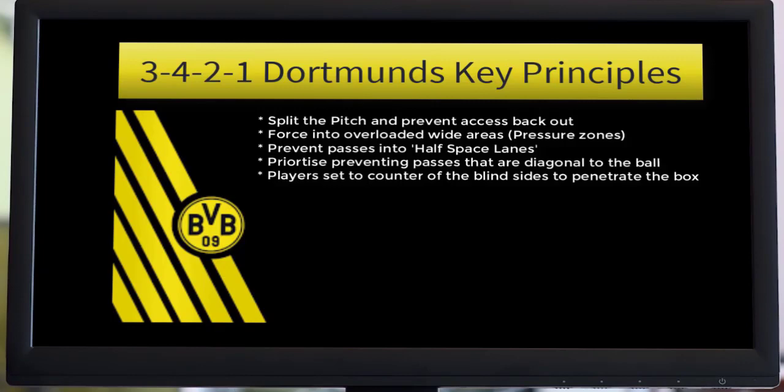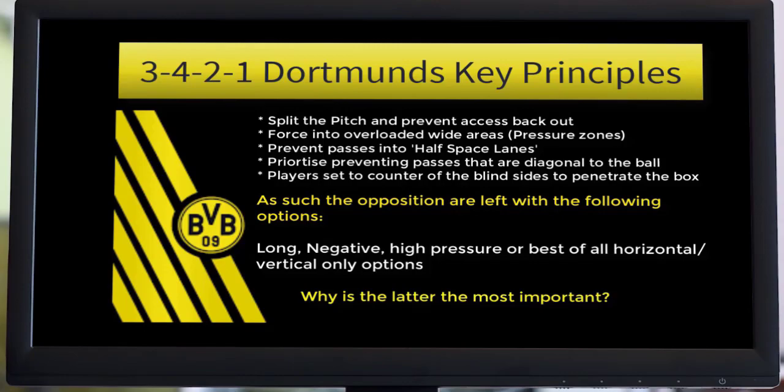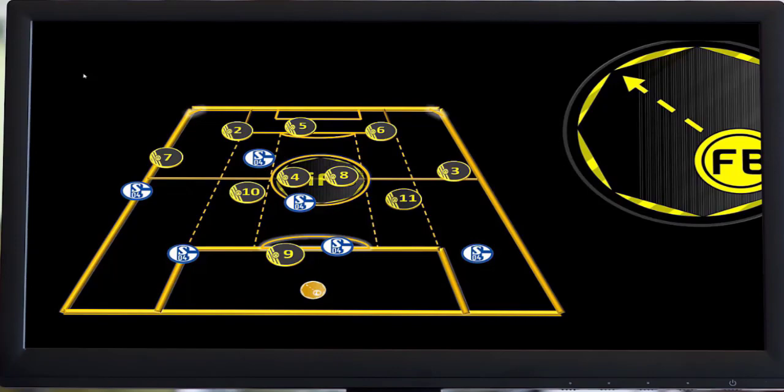This presentation is going to be looking at the defensive out-of-possession principles — what's unique about their play. Some of the key principles listed are: split the pitch, force the play wide into overloaded areas, prevent play into half-space lanes, prioritise blocking the diagonal to the ball pass, get players set for the counter-attack via blindside positioning. This leaves the opposition with options to go long, play negative, or — best of all — play horizontal passes.